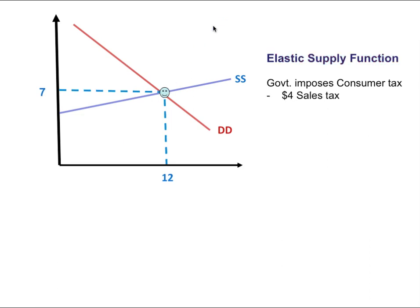In this case we have a demand and supply function that gives us an equilibrium price of seven dollars, and now the government imposes a sales tax of four dollars.